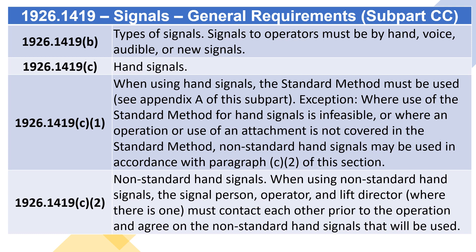1926.1419(C)(2) — Non-standard hand signals: When using non-standard hand signals, the signal person, operator, and lift director, where there is one, must contact each other prior to the operation and agree on the non-standard hand signals that will be used.